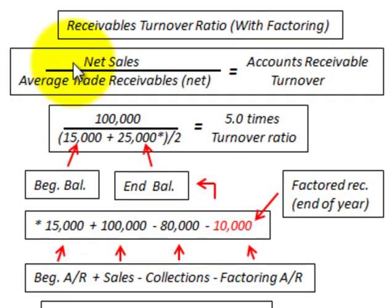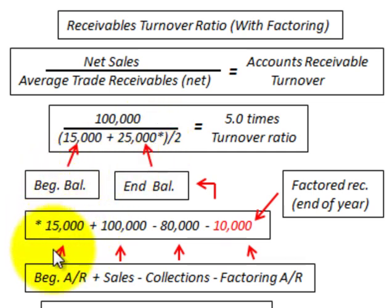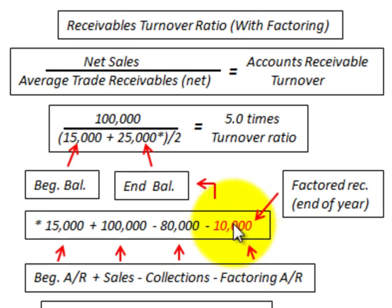Now let's calculate the receivables turnover ratio with factoring. The formula is the same: net sales divided by average trade receivables. Net sales are still $100,000 and the beginning balance is still $15,000. With factoring, the ending balance is calculated as: $15,000 beginning balance, plus $100,000 in sales, minus $80,000 in normal collections, minus $10,000 in factored receivables sold at year end, giving an ending balance of $25,000.